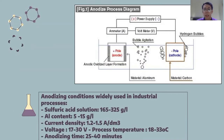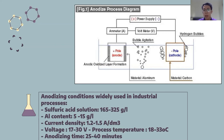This is the anodizing process diagram. There is a power supply, an ammeter, and a voltmeter. There is an anode at the positive pole and a cathode at the minus pole. At the positive pole we have aluminum, and at the negative pole we have carbon.